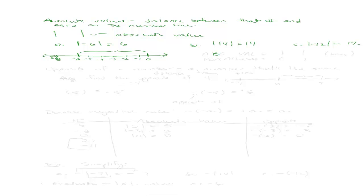I also want you to keep in mind the difference between absolute value and parentheses. Absolute value uses straight bars, while parentheses are curved — they mean different things. The absolute value of a number means finding the distance between that number and 0 on the number line. Parentheses just mean you want to do that operation first.